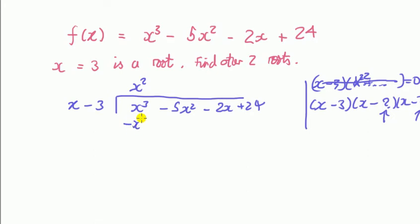This times this is minus x squared. Change the sign. Plus 3x squared. And then do long division. And then subtract. What am I saying? 0 minus 2x squared.